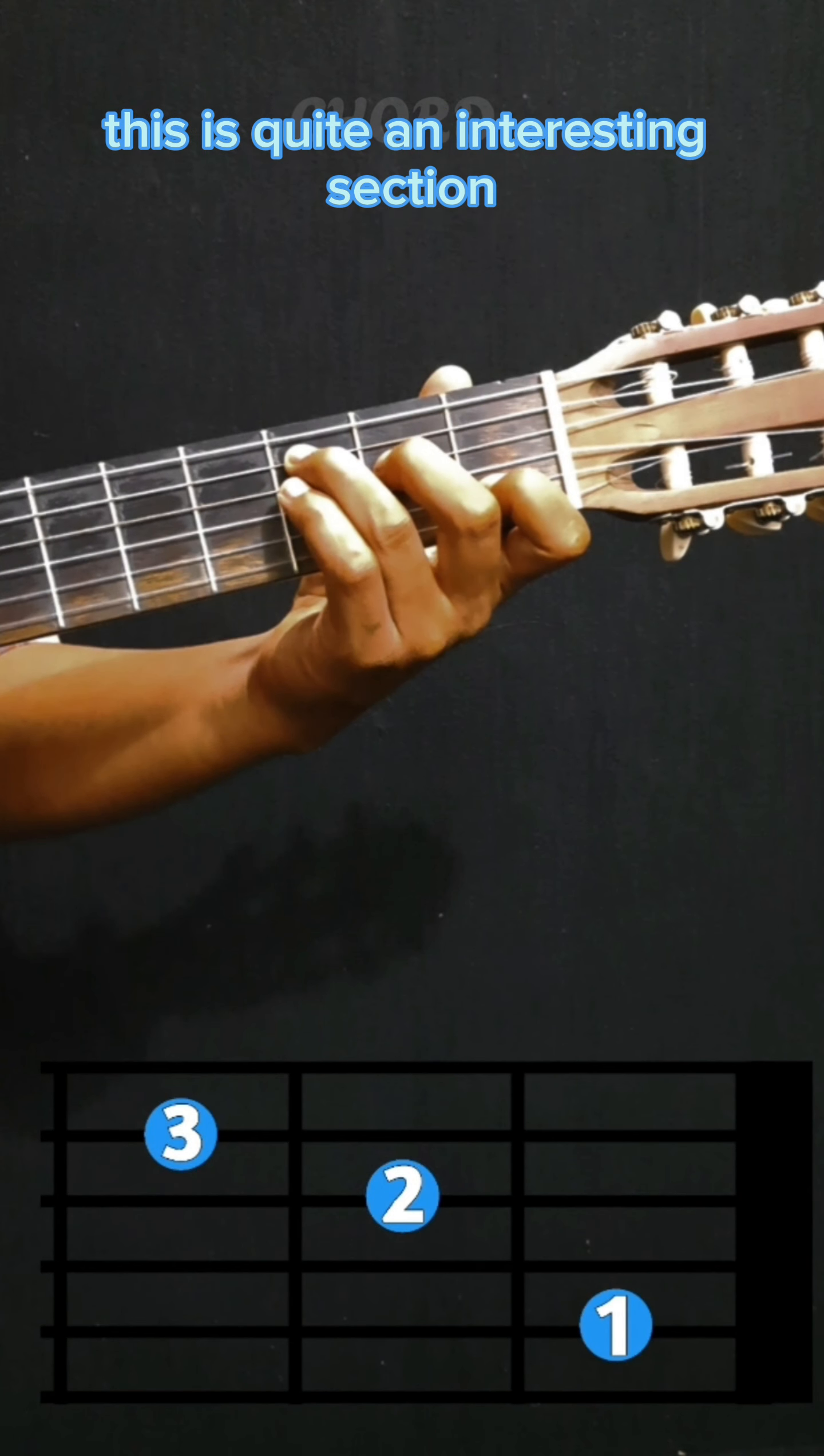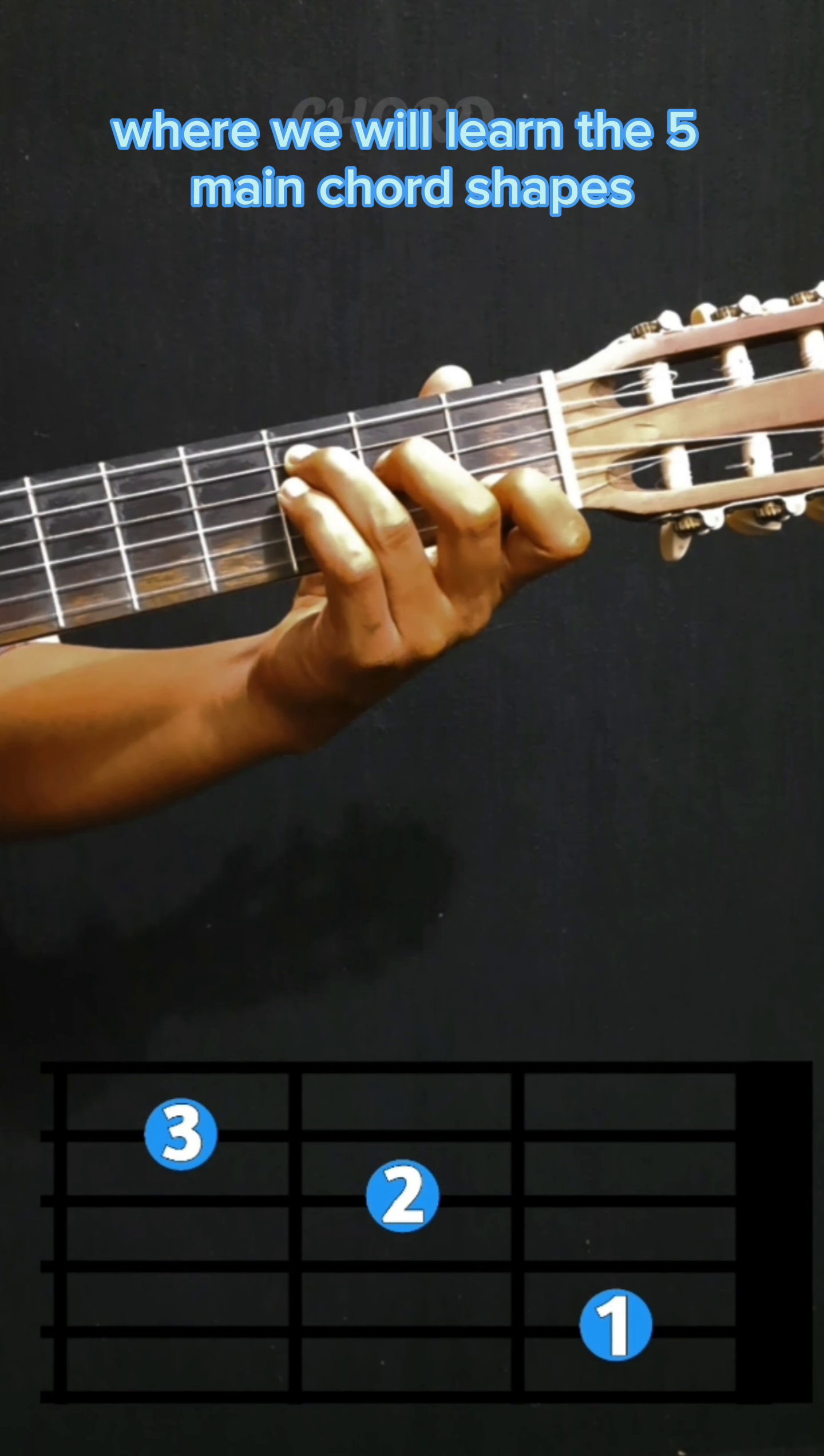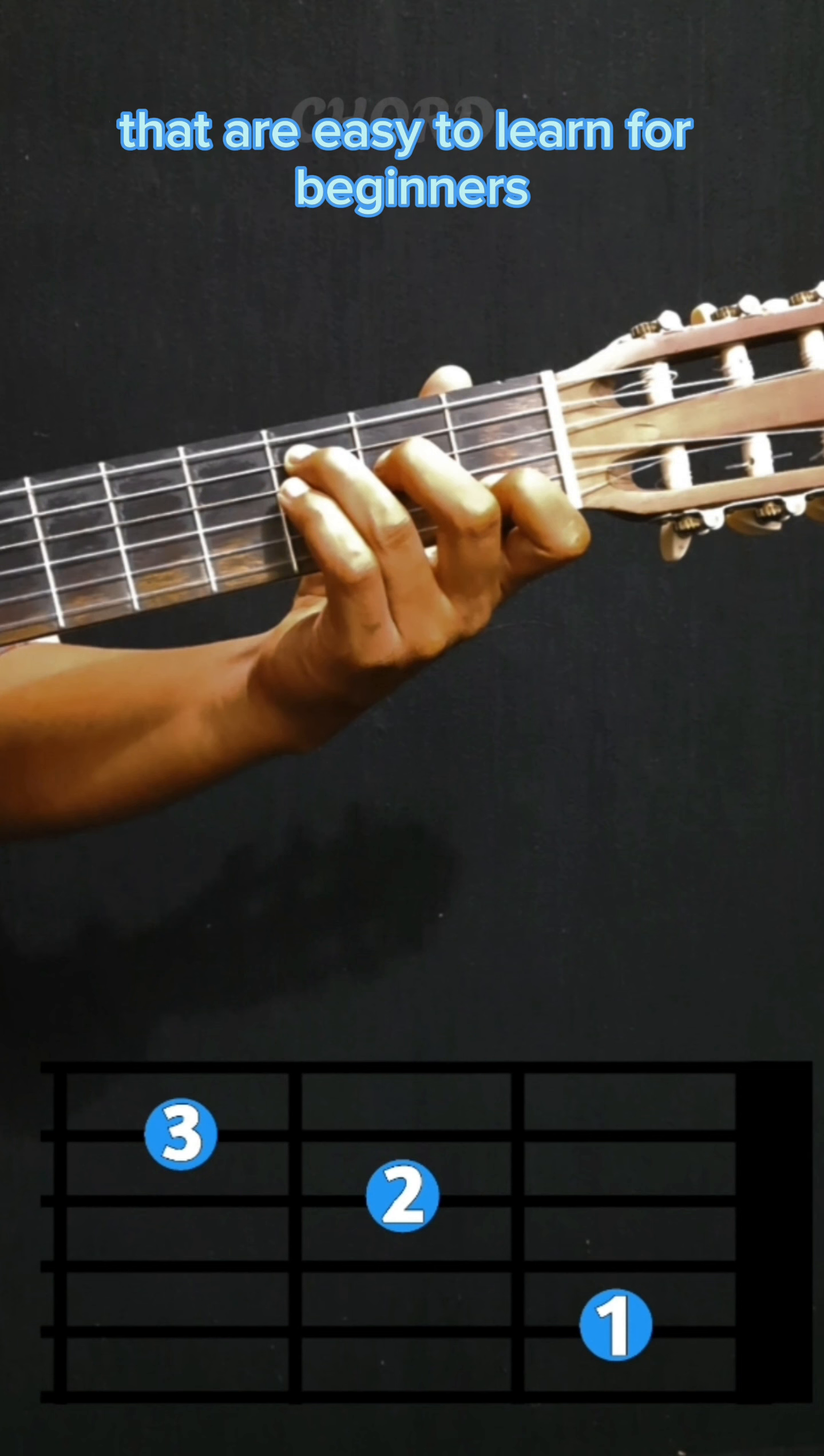This is the fifth part for beginners. This is quite an interesting section where we will learn the five main chord shapes that are easy to learn for beginners.